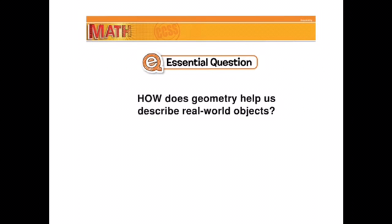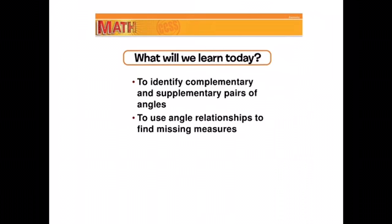This chapter focuses on the essential question of how does geometry help us describe real-world objects. More specifically, today we're going to learn about identifying complementary and supplementary pairs of angles, and then how do we use those relationships to find that missing measure.